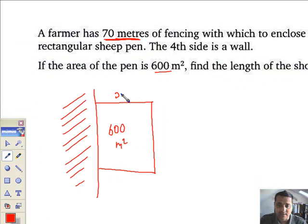If these are the shorter sides, let's just call them x. That means the remaining long side, which is here, must be 70 metres minus these two x's. x and x makes 2x, and the whole thing comes to 70. Therefore, the longest side must be 70 minus 2x. I can form a straightforward equation here.